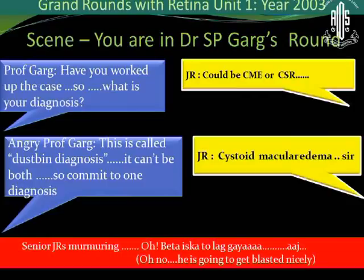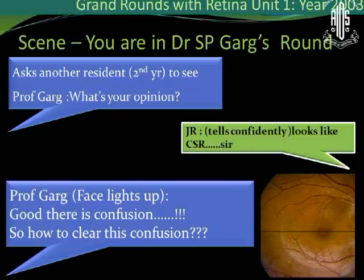The JR said, cystoid macular edema, sir. Then he asked the registrar to see. The registrar said, sir, it looks like a CSR to me. Then Dr. Gerg said, okay, good — there is confusion. So, how do we clear this confusion?